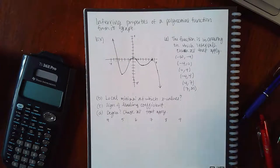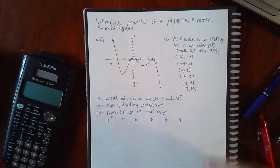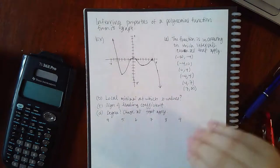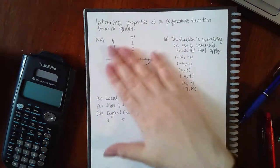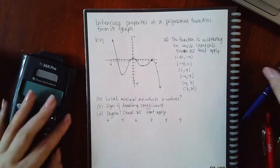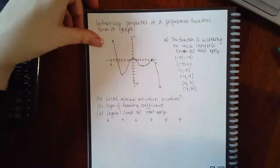Okay, so now we have this topic: inferring properties of a polynomial function from its graph. We're doing the reverse now. Before we were looking at the polynomial and trying to figure out the graph. Now we're given the graph and they want us to figure out what the function would look like.